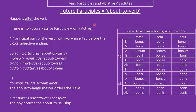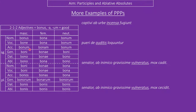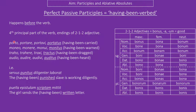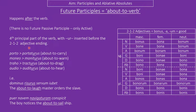Future participles are a bit rarer but you will see them. They happen after the verb, as suggested in the name. They're formed in basically the same way as the perfect passive participle — we take the fourth principal part and add -ur-. So porto goes to portaturus, moneo to moniturus, etc. They have the same endings as the perfect passive participle, so they look nearly identical except for the -ur-. They translate as something about to happen: 'the about to laugh dominus orders the slave', 'the boy catches sight of the about to sail ship.'